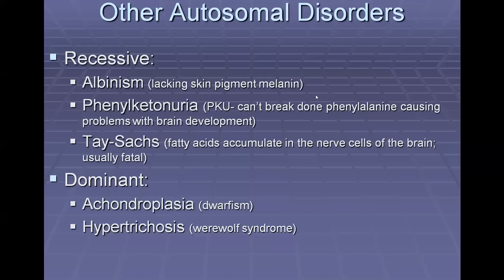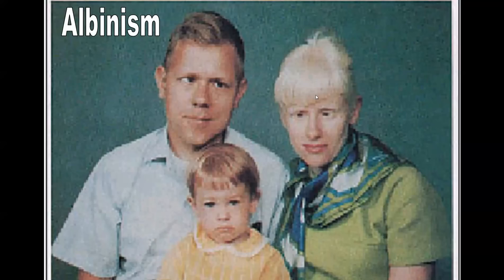Children with PKU have to go on a special diet to make sure they're not getting any phenylalanine when they're younger, because it can have issues with brain development. Tay-Sachs is where fatty tissues accumulate in the nerve cells of the brain, and this is usually fatal fairly early in life because your neurons can't function with all those fatty acids built up on them. There are also dominant autosomal disorders such as achondroplasia, which is dwarfism, and hypertrichosis, which is werewolf syndrome.